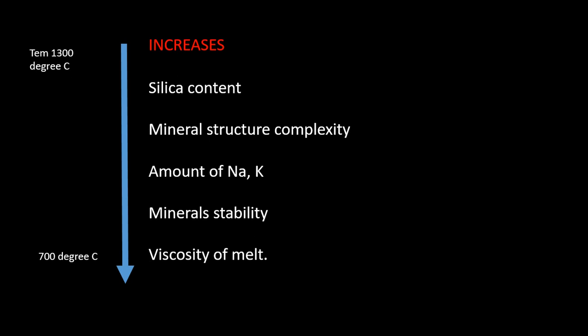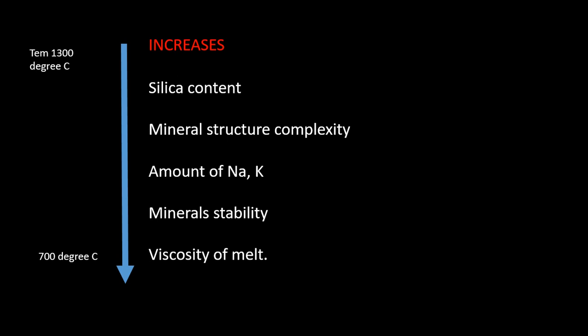Several properties increase with decreasing temperature as we go down the series: silica content increases, mineral structural complexity increases, the amounts of Na and K increase, and mineral stability also increases. A common exam question is: given minerals like olivine, pyroxene, biotite, and quartz, which is most stable? The answer is quartz, because it crystallizes last, has the most complex structural type, and is therefore the strongest. Viscosity of the melt also increases down the series.